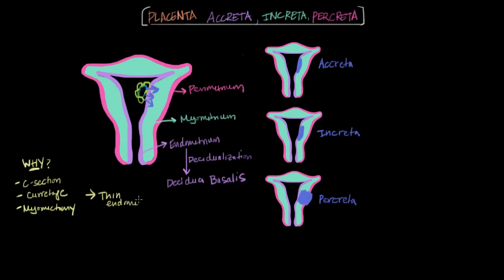Another thing that can sometimes happen is that the placenta implants in a lower segment of the uterus rather than at the top like it's supposed to, which is a condition that's called placenta previa. And the problem is that the lower parts of the uterus generally have thinner walls and they don't form as thick of a decidua.